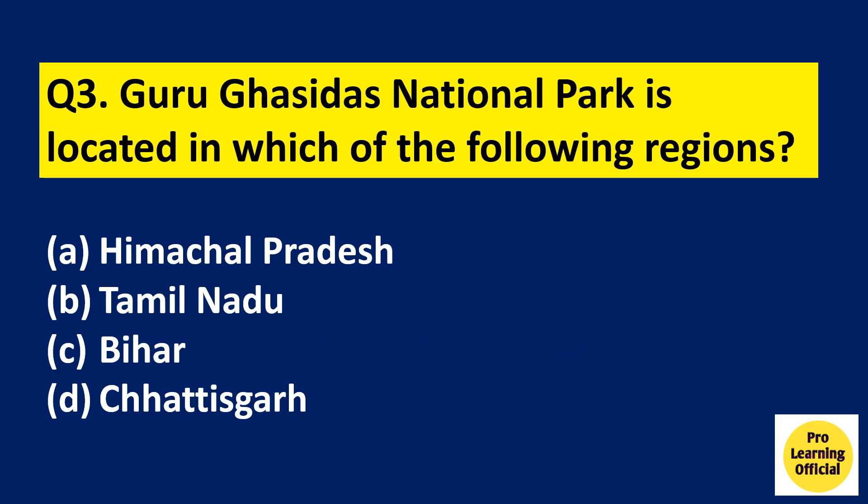Question number 3: Guru Ghasidas National Park is located in which of the following regions? Option A: Himachal Pradesh. Option B: Tamil Nadu. Option C: Bihar. Option D: Chhattisgarh. The right answer is Option D, Chhattisgarh.